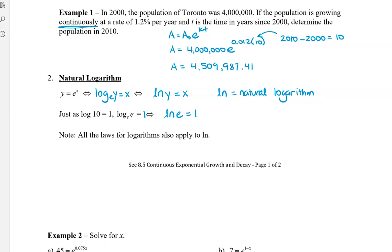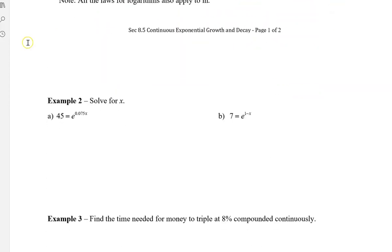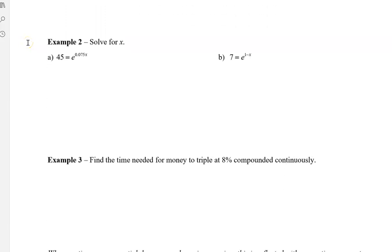So the first one here we have 45 is equal to e to the power of 0.075x. So because the base is e, instead of taking the log of both sides, we're going to take the natural log of both sides. So we're going to write ln 45 equals ln or natural log e to the 0.075x. So remember that we don't calculate anything until the very, very end. So don't type into your calculator yet. We're going to use our power log to move the exponent, which is 0.075x, to the front.